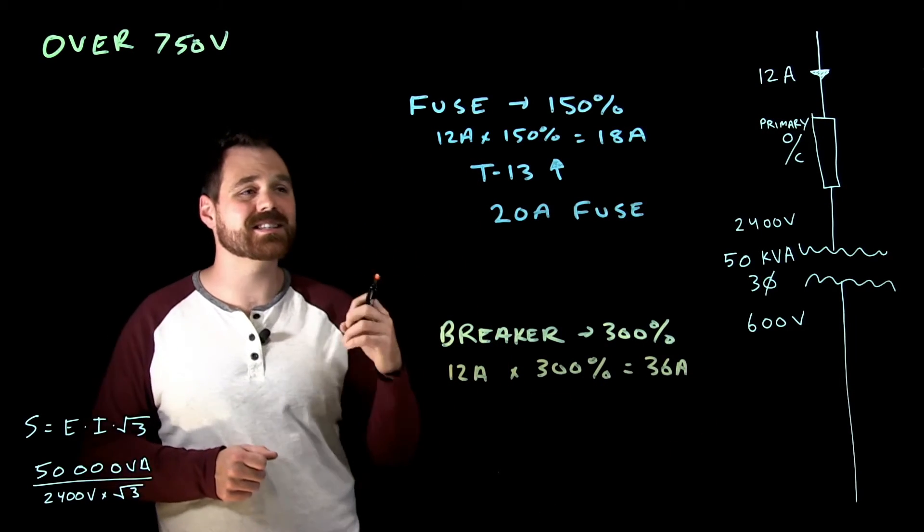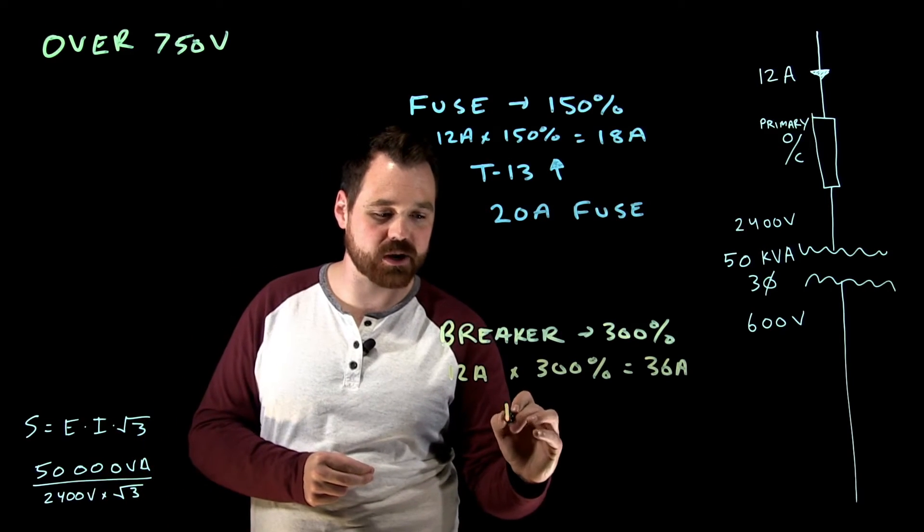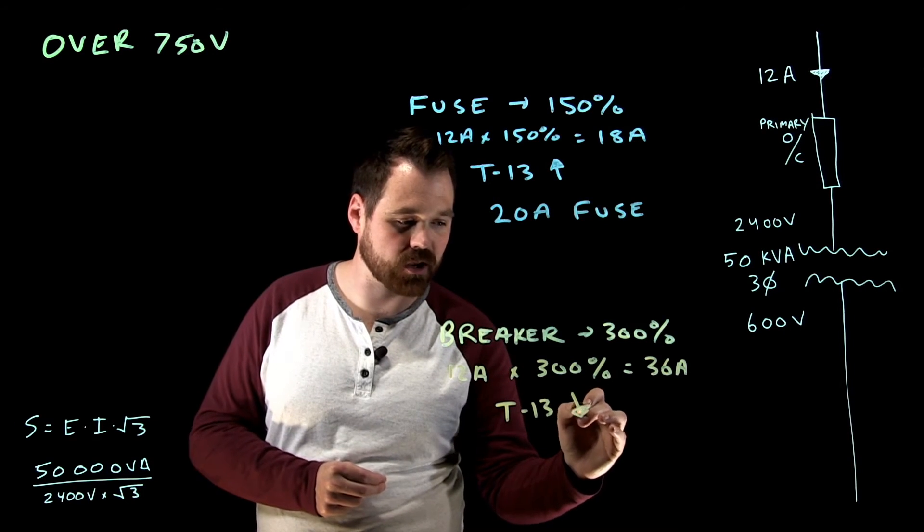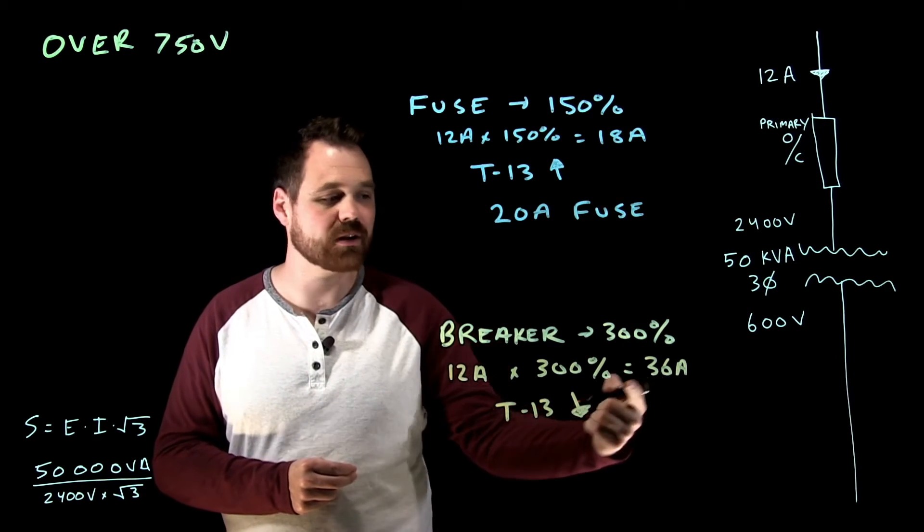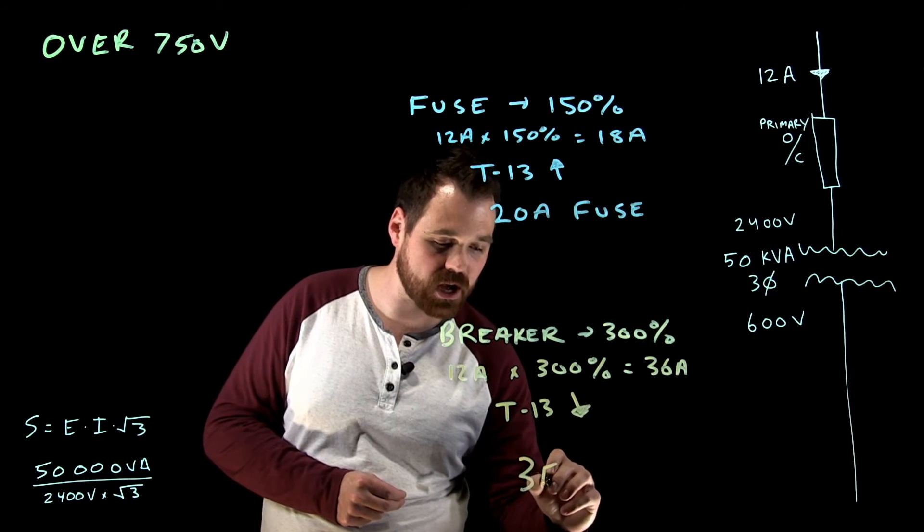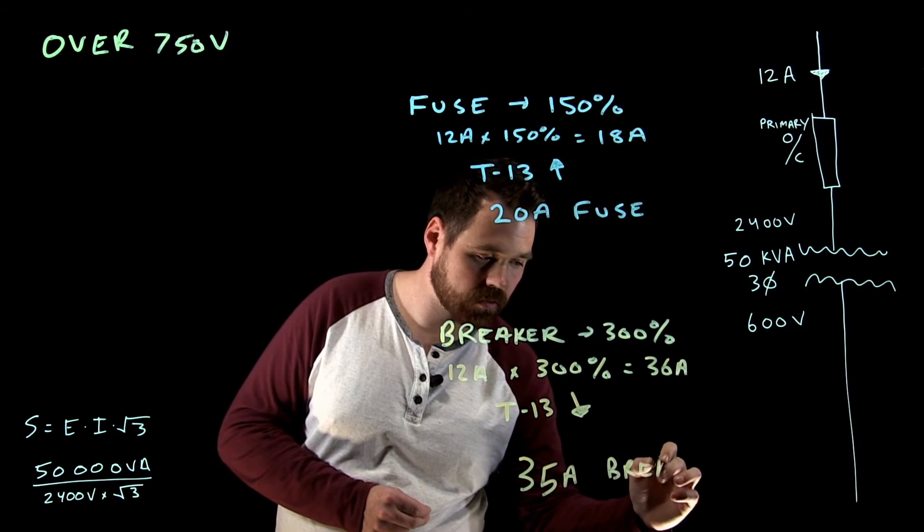Now in this case, it cannot exceed 300%. So that means when I go to table 13, I actually have to pick, if a 36 is not available, I have to go down to the next smaller size. So I'd end up with a 35 amp breaker.